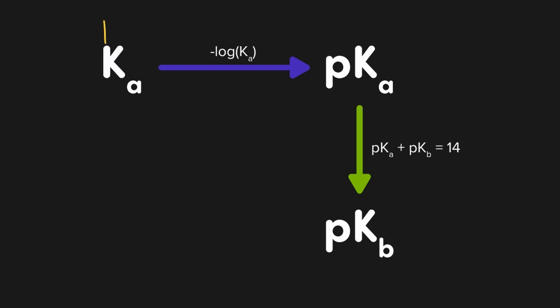So if we started with a Ka of 10 to the negative 3, then the pKa value would be 3, since that's the negative log of 10 to the negative 3. And if the pKa value is 3, then the pKb value would have to be 11, since that's the only way the two values would sum to 14.